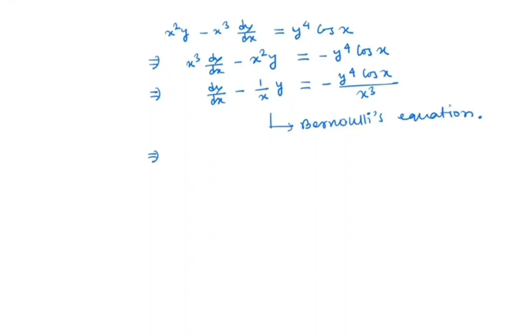So first we divide both sides of the equation by y to the power 4. So we have y power minus 4 dy/dx minus 1 by x times y to the power minus 3 is equal to minus cos x by x cubed.